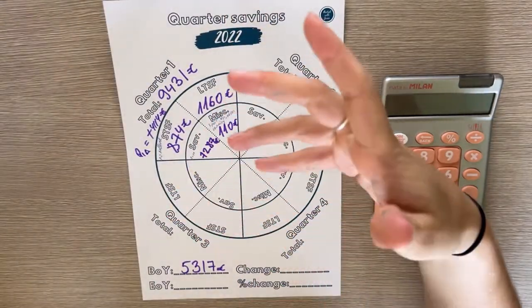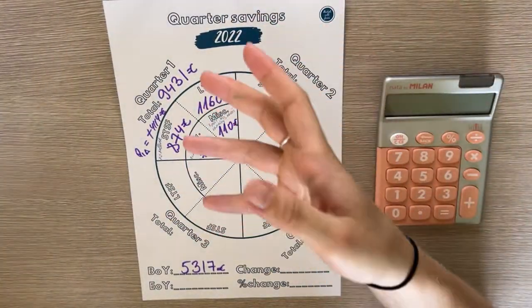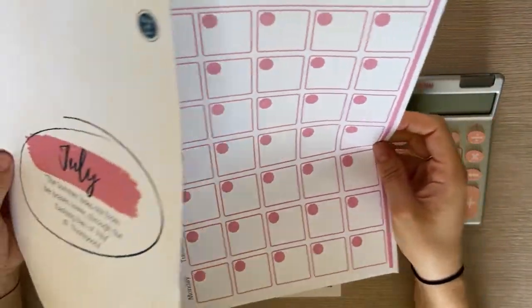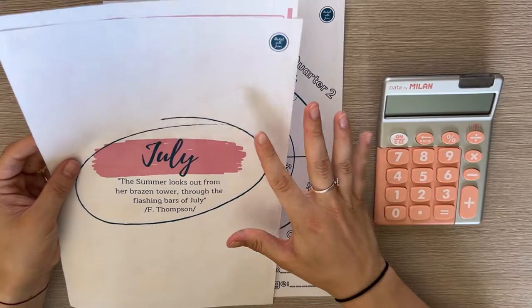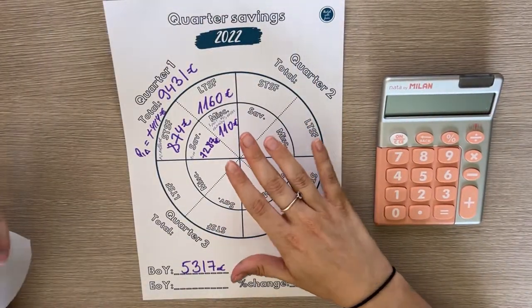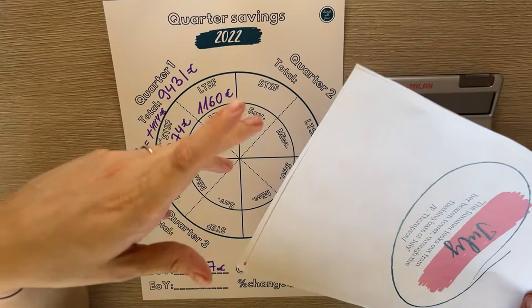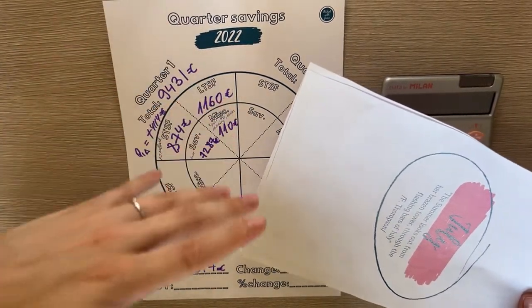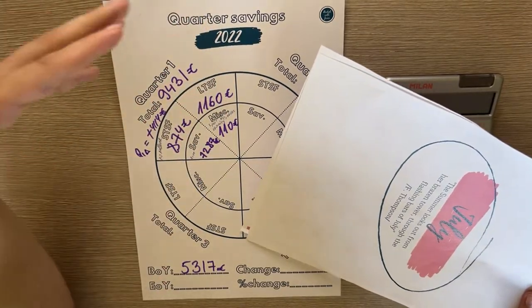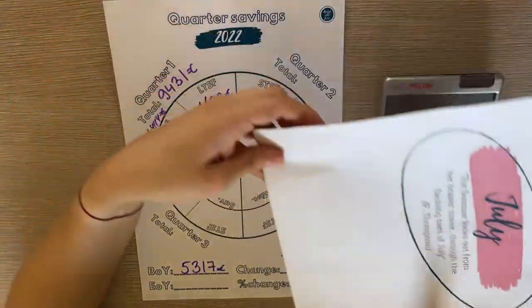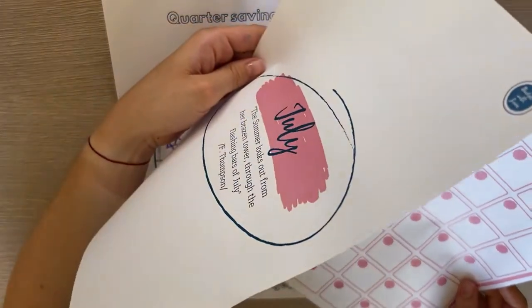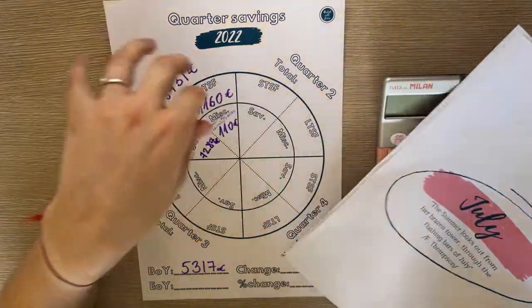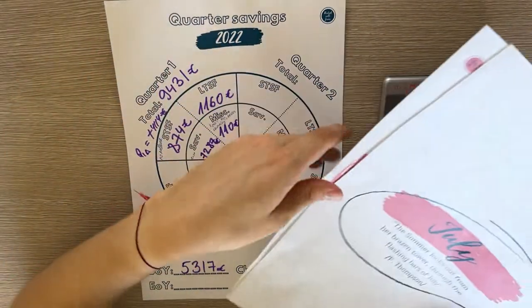This video is kind of all over the place, an in-between video that I didn't know when to post or when to film. This is an update on what the July situation is and also updating the savings. I also don't want to introduce August yet because I will be back in the beginning of August.